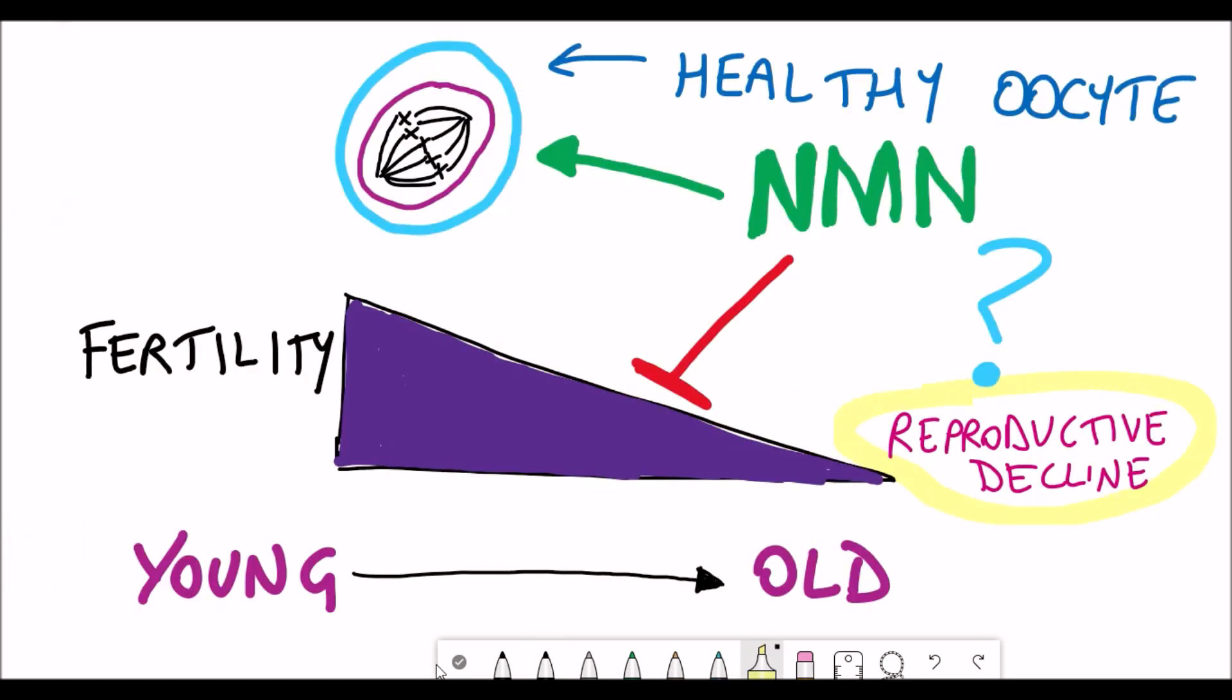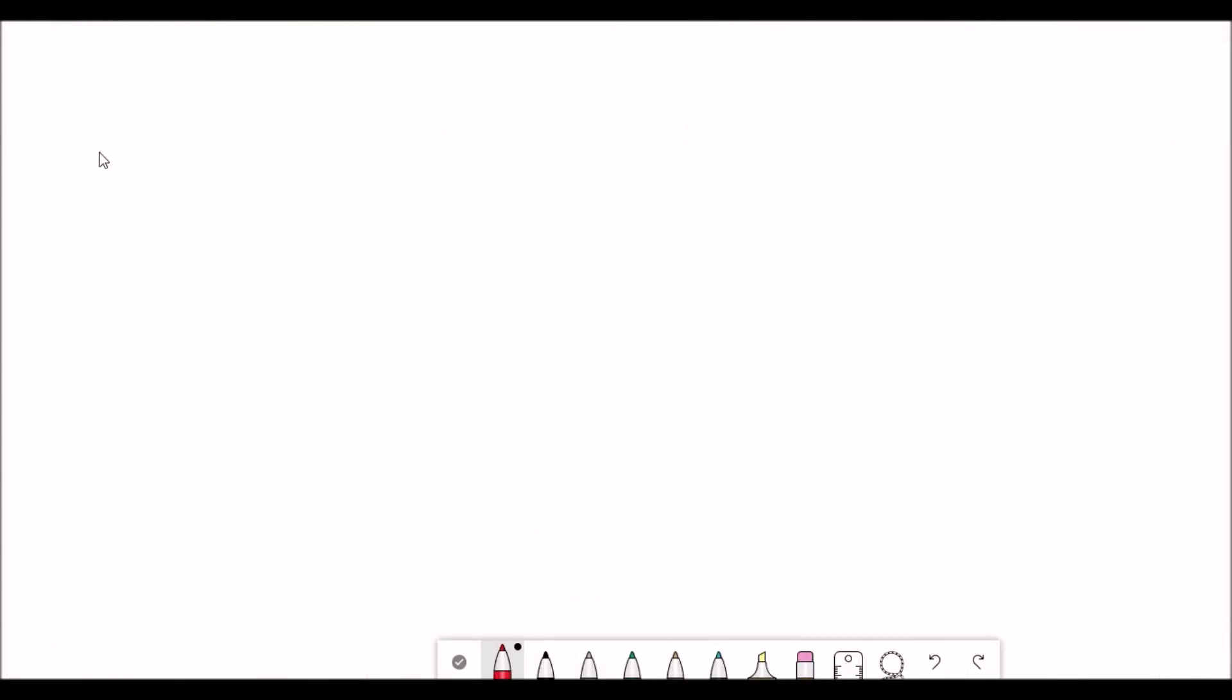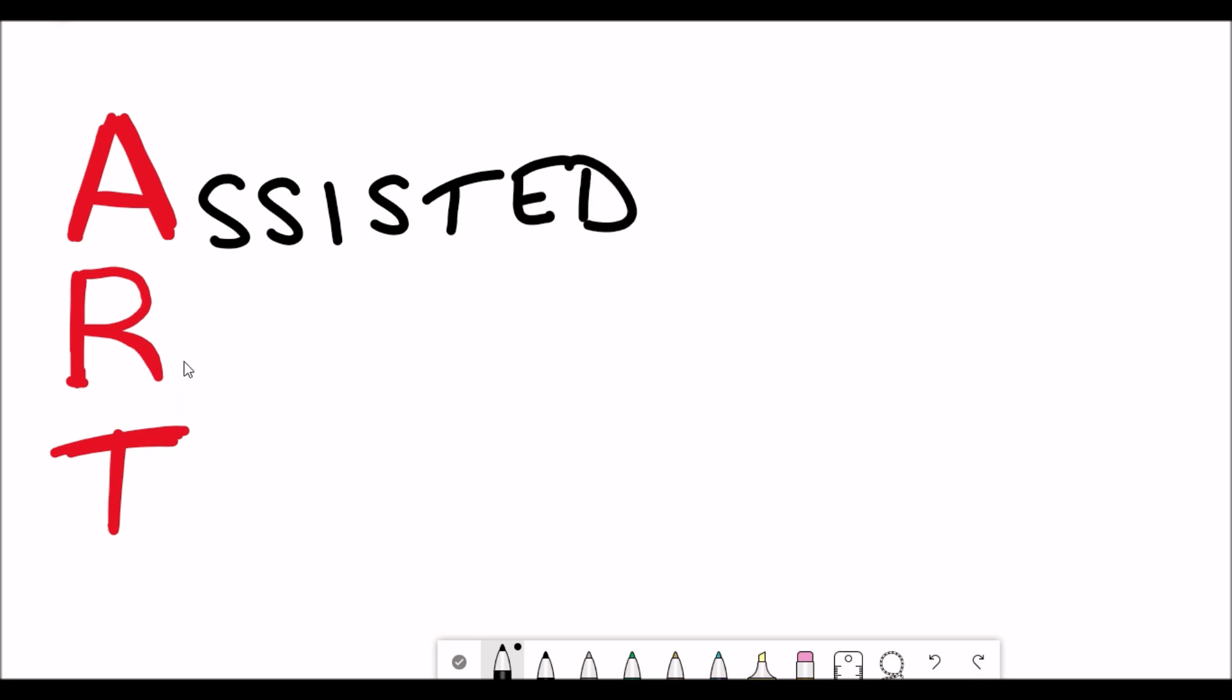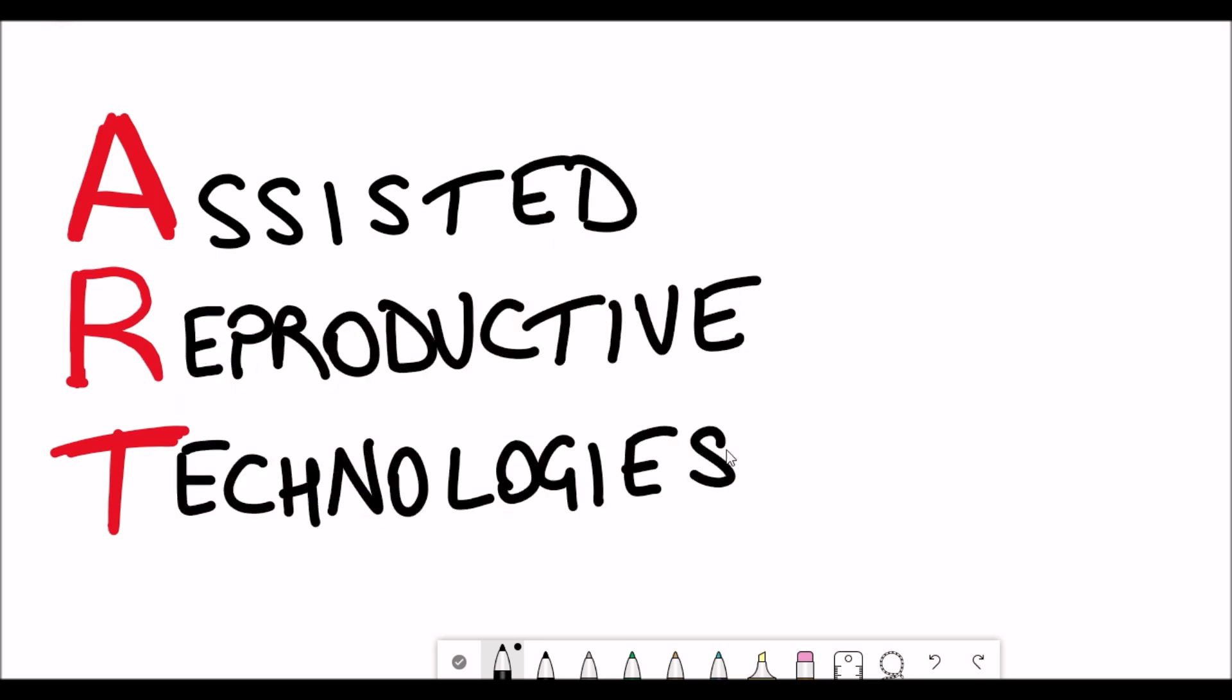Before jumping into the paper, there's quite a few terminology we need to understand first. ART stands for assisted reproductive technologies - these are technologies currently used for people who suffer with infertility to enable them to have children.